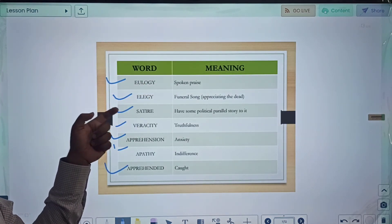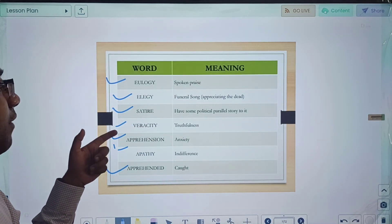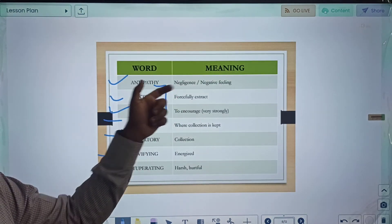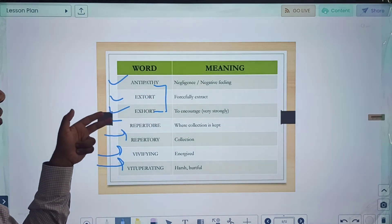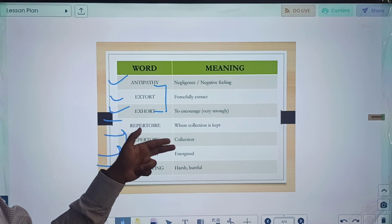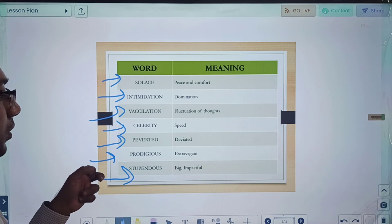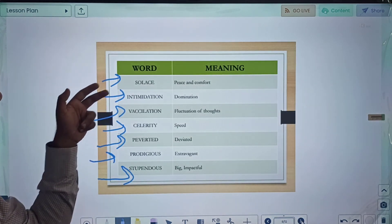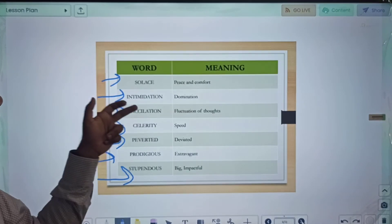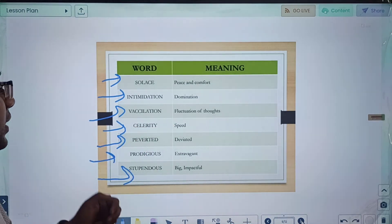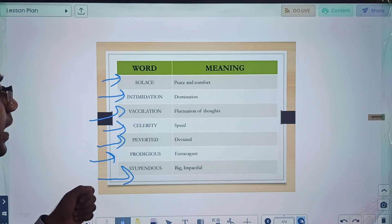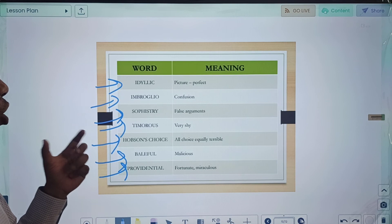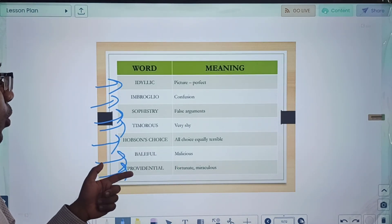Eulogy spoken praise, elegy funeral song, satire some political parallel story to it, veracity truthfulness, apprehension anxiety, apathy indifference, apprehended caught. Antipathy negligence or negative feeling, extort forcefully extract, exhort to encourage, repertoire where collection is kept, repertory collection, vivifying energized, vituperating harsh or hurtful. Solace peace and comfort, intimidation domination, vacillation fluctuation of thoughts, celerity speed, perverted deviated, prodigious extravagant, stupendous big or impactful. Idyllic picture perfect, imbroglio confusion, sophistry false arguments, timorous very shy, Hobson's choice all choices equally terrible, baleful malicious, providential fortunate or miraculous.